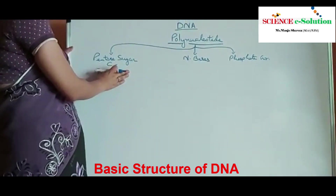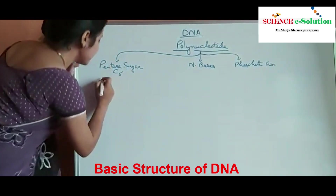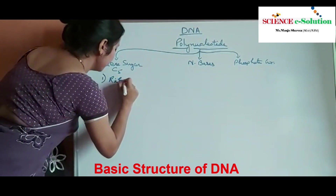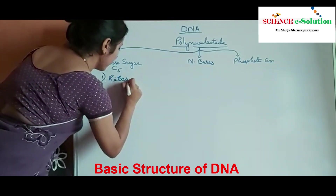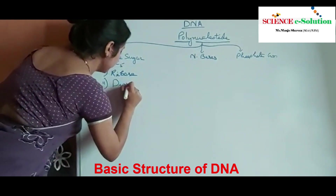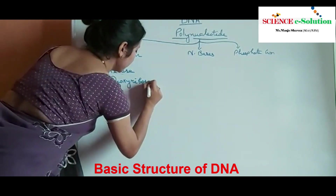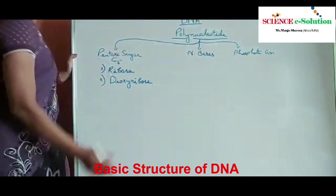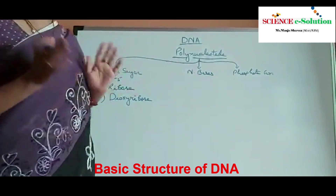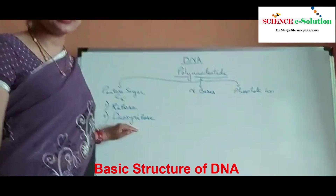Pentose sugar, as I have said, is a five carbon sugar. There are two types of pentose sugars: the first one is a ribose sugar and the second one is deoxyribose sugar. The full form of DNA is deoxyribonucleic acid, so it is obvious that deoxyribose sugar is present in DNA.